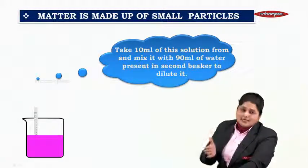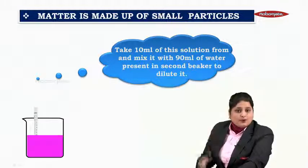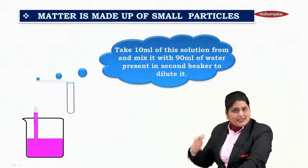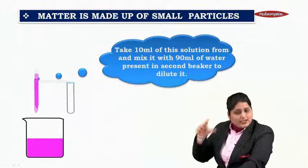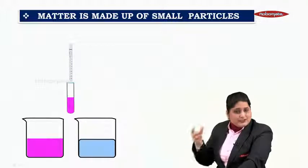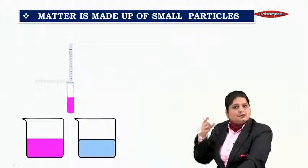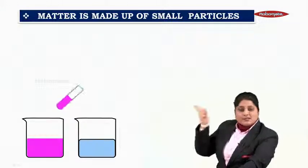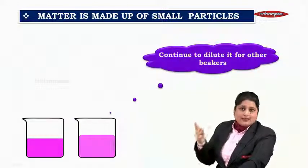So what we are doing is from first beaker, we are taking 10 ml and putting it in a test tube, and we are transferring this solution which contains 10 ml of potassium permanganate solution from beaker number 1 into beaker number 2.